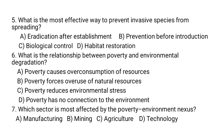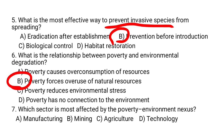Question number seven: which sector is most affected by the poverty-environment nexus? a) manufacturing, b) mining, c) agriculture, d) technology. Prevention before introduction is the most effective way to prevent invasive species from spreading — b is the correct answer. Poverty forces overuse of natural resources is the relationship between poverty and environmental degradation — b is the correct answer. The agricultural sector is the most affected by the poverty-environment nexus — c is the correct answer.